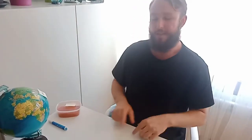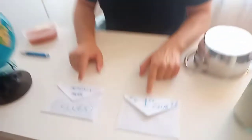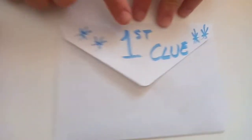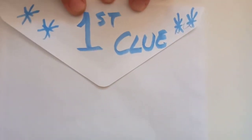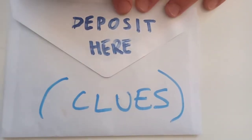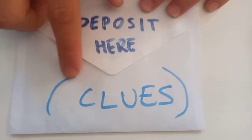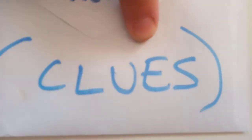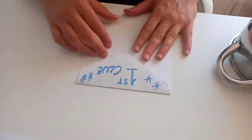So you can imagine, now we have two envelopes here. Let's have a closer look. We have one which says 'first clue,' and then we have one where it says 'deposit here' — this is another word for clues. So imagine you are playing and you are preparing this. You're going to need to open the envelope with 'first clue.'